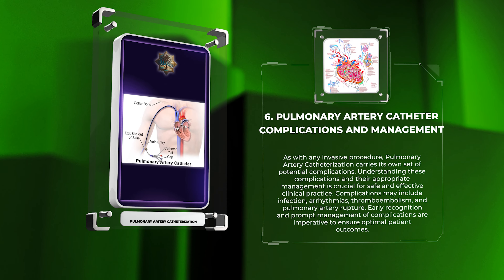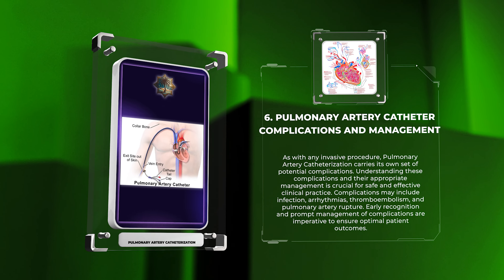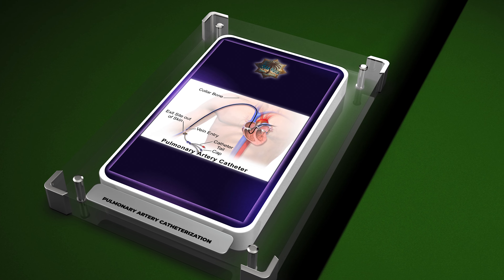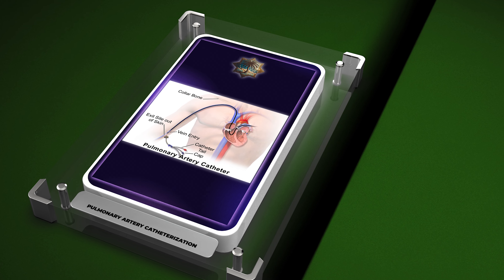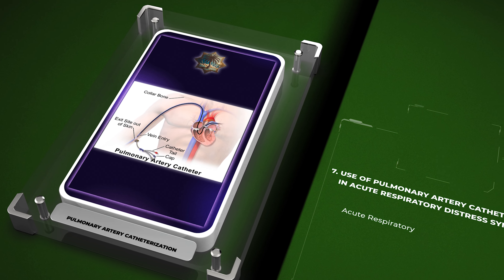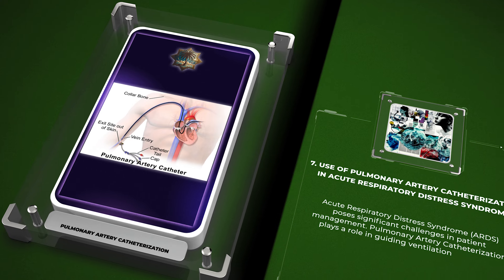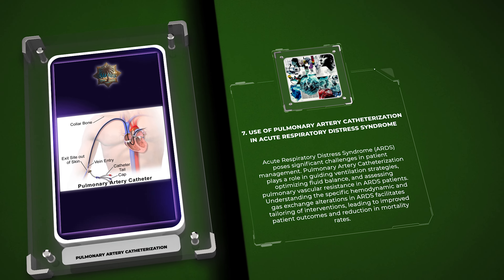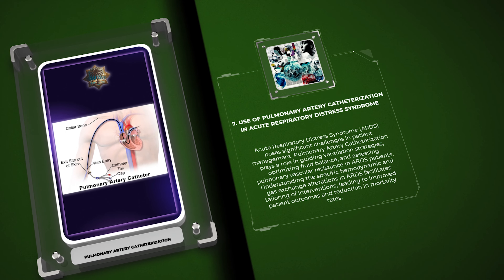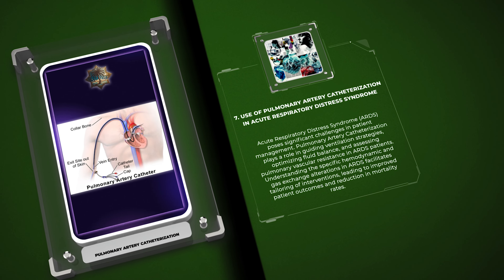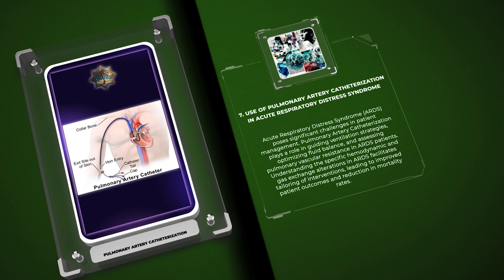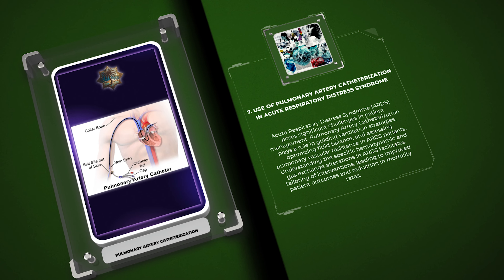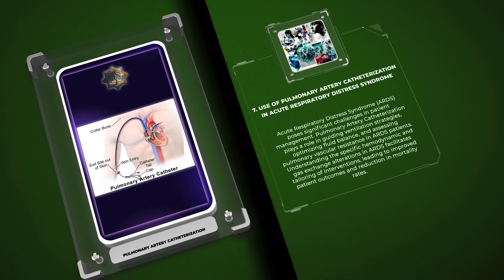Acute respiratory distress syndrome, ARDS, poses significant challenges in patient management. Pulmonary artery catheterization plays a role in guiding ventilation strategies, optimizing fluid balance, and assessing pulmonary vascular resistance in ARDS patients. Understanding the specific hemodynamic and gas exchange alterations in ARDS facilitates tailoring of interventions, leading to improved patient outcomes and reduction in mortality rates.